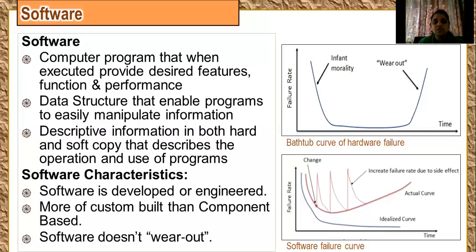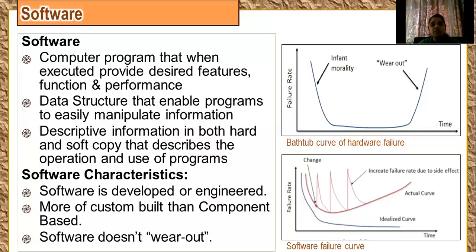The first characteristic is that software is developed or engineered — not manufactured. Hardware has always been manufactured, whereas software is always engineered. So software follows an engineering approach whereas hardware follows a manufacturing kind of approach. The approach of development for hardware and software are totally different.